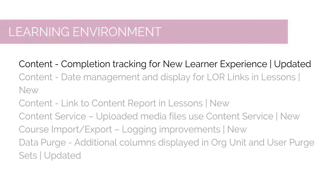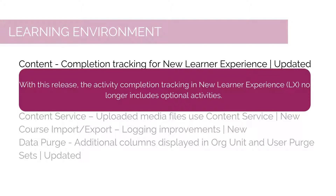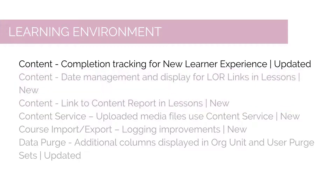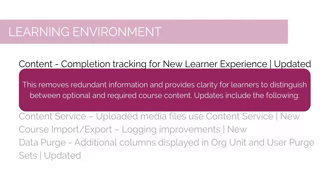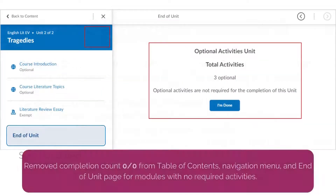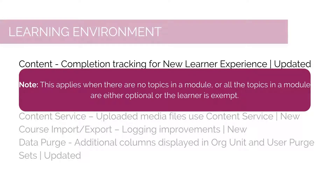With this release, the activity completion tracking in New Learner Experience no longer includes optional activities. This removes redundant information and provides clarity for learners to distinguish between optional and required course content. Updates include: removing the completion count of 0 out of 0 from the table of contents, navigation menu, and end of unit page for modules with no required activities. This applies when there are no topics in a module or all topics are either optional or the learner is exempt.